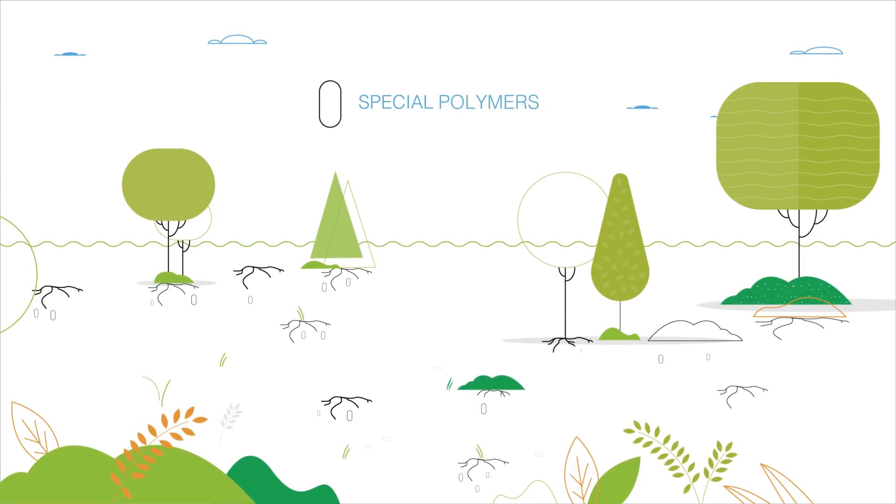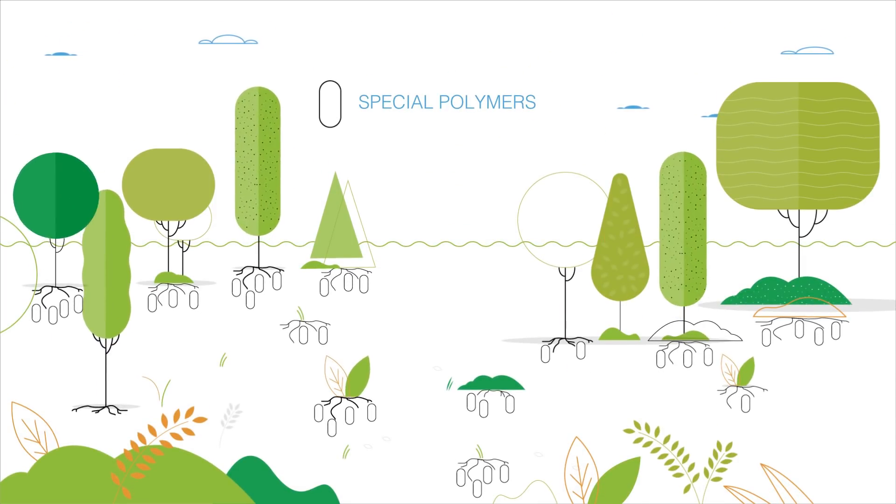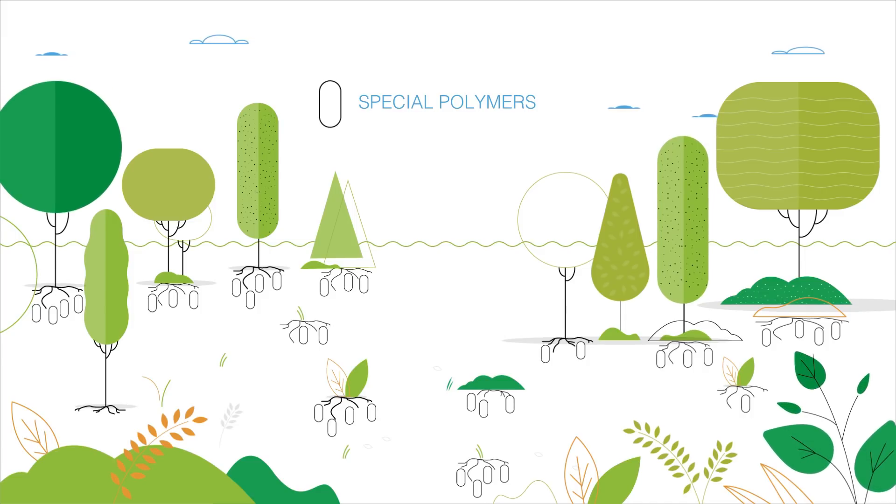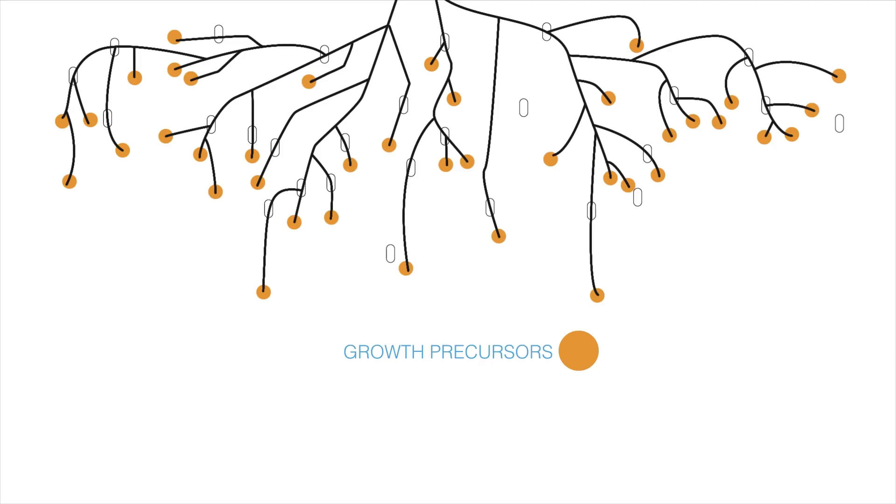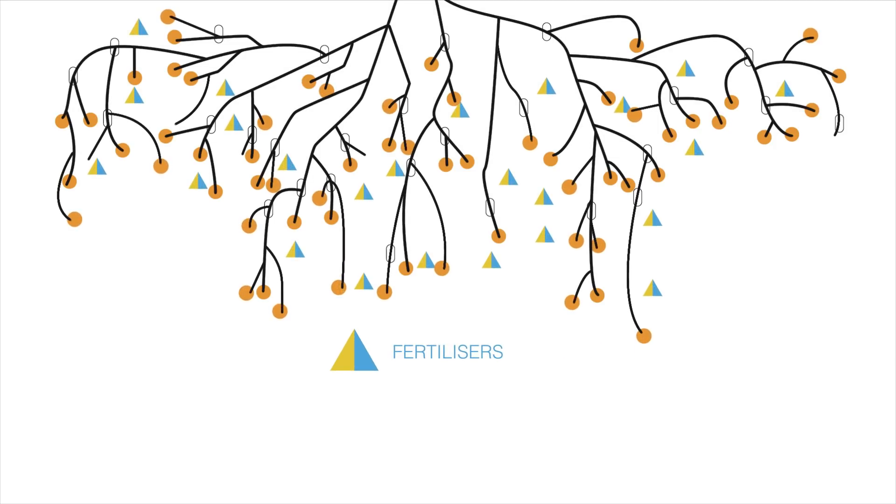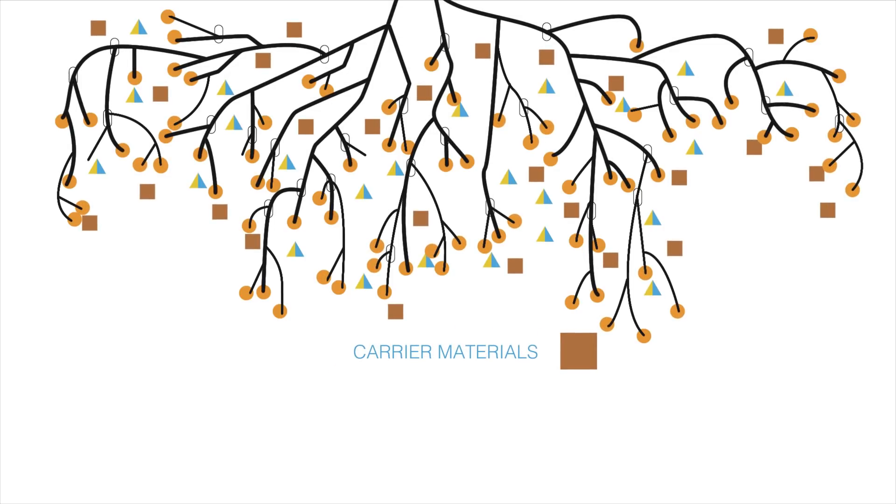Special polymers store more water and allow plants to stay hydrated longer, even in a dry environment. Growth precursors stimulate the formation of new roots, crucial for the development and survival of the plant. Fertilizers provide the right nutrients, and the carrier materials further improve soil quality.